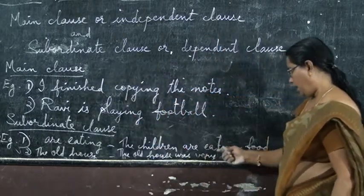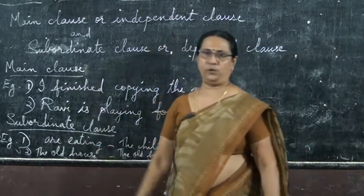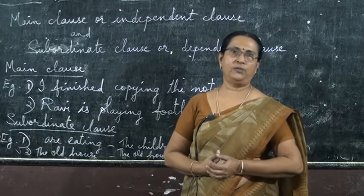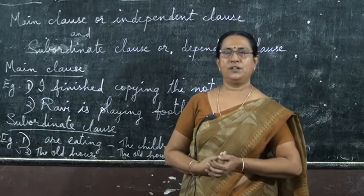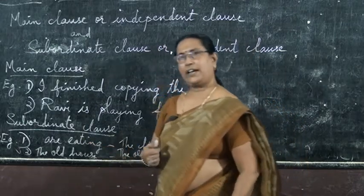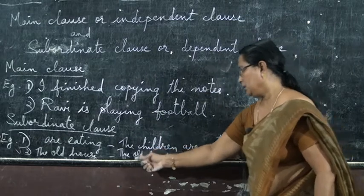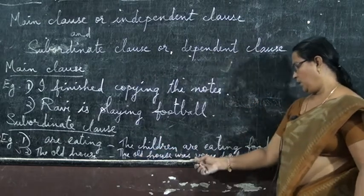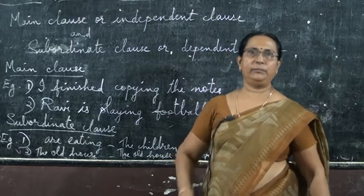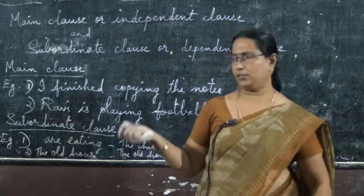So, 'the children are eating food' is complete. Now the second example: 'the old house' — what does that tell you? What is the state of the old house? Or where is the old house? How will you describe it? I have written here: 'the old house was very dark' — that gives you the meaning of the sentence.